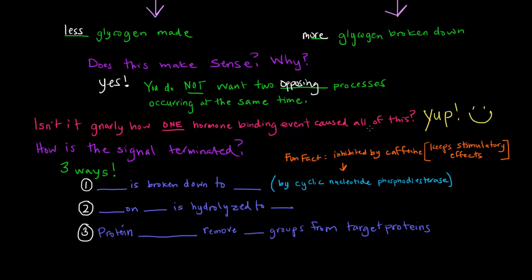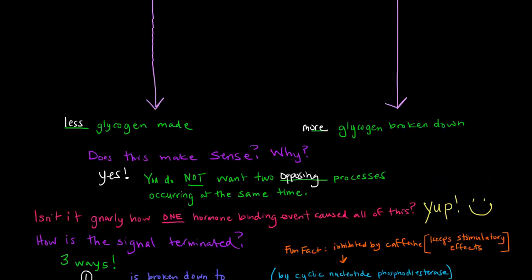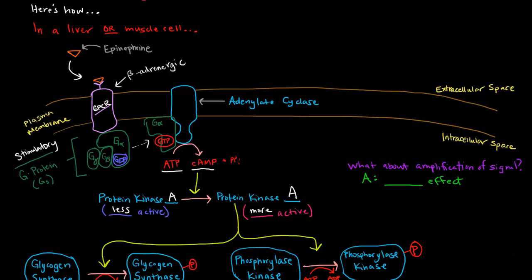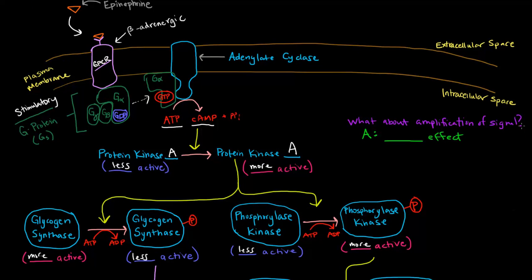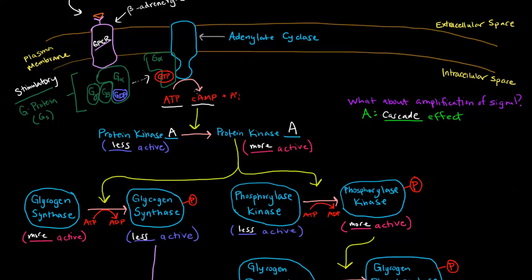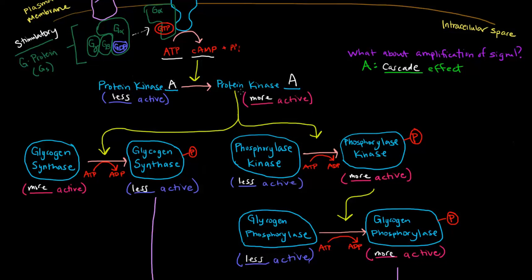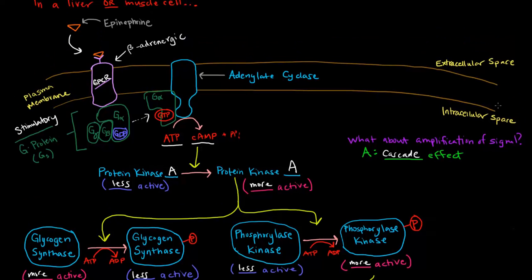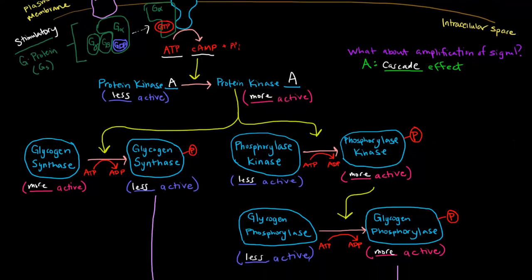One epinephrine binding event caused all of this — that's called the cascade effect. How is the signal amplified? One epinephrine molecule might create ten cyclic AMPs; each cyclic AMP can activate ten protein kinases, giving a hundred active protein kinases; and each of those can have ten phosphorylation events — meaning a thousand glycogen synthases become less active and a thousand phosphorylase kinases become more active, all from just one epinephrine binding.